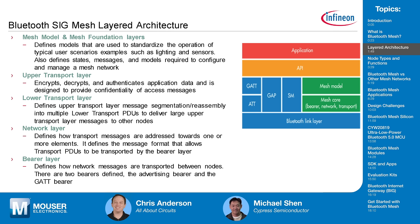The mesh core includes three different elements: a transport layer, a network layer, and a bearer layer. The transport layer is further separated into upper and lower layers. The upper transport layer focuses on encryption, decryption, and authentication to ensure security for mesh devices. The lower transport layer deals with PDUs — if your data is too big, it will segment and then reassemble the packets.